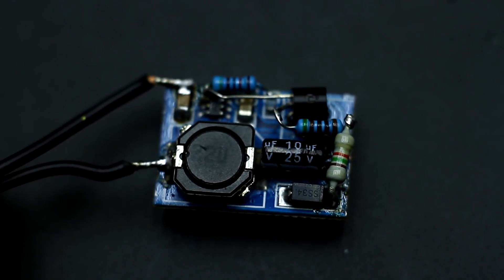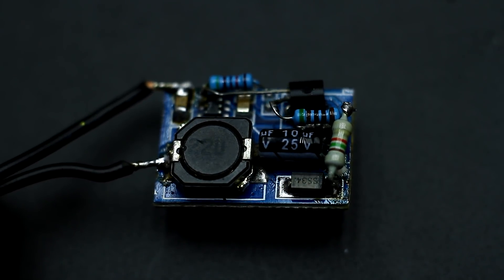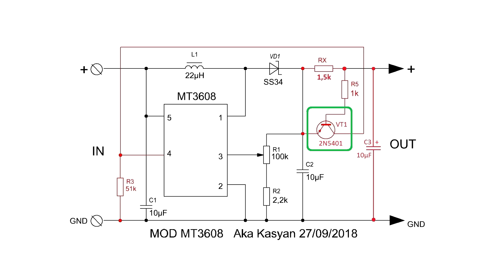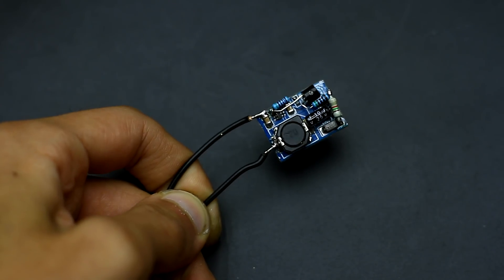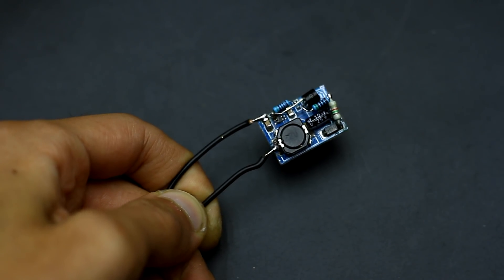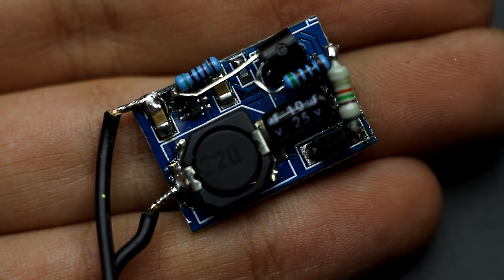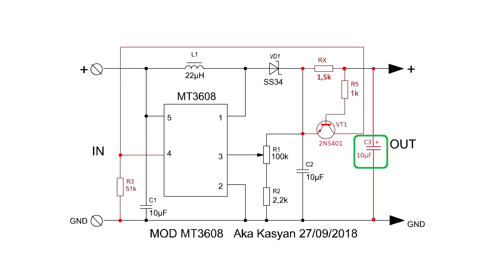Rework doesn't take much time and costs little. Transistor is any small or medium power. I advise you to take transistors with a high-gain current. I had to cut the MT3608 board to fit into the case. Electrolytic capacitor of 10µF is added at the output to smooth out the pulsations.